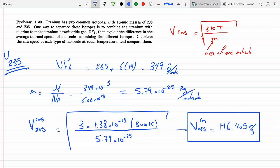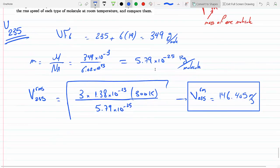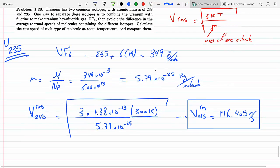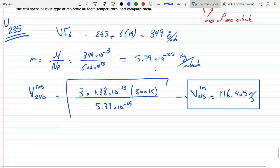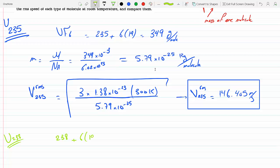If I do the same exact thing for the 238, it'll be the same exact thing except I would count 238 for the mass, so plus 6 times 19, and then I would divide that again by Avogadro's and multiply it by 10 to the minus 3.